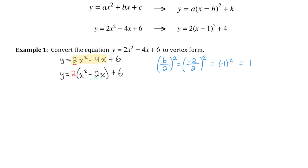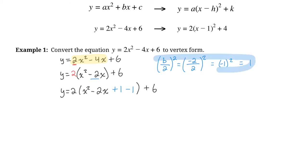This value is important because we're going to introduce it into our equation. Starting with y equals 2 times open bracket x squared minus 2x, we add 1 and subtract 1 inside the bracket, then close the bracket and bring down the plus 6. Adding and subtracting the same number isn't random — it comes from (b divided by 2) squared, and since 1 minus 1 equals 0, it doesn't change the equation's value. Always add the number first and then subtract it.